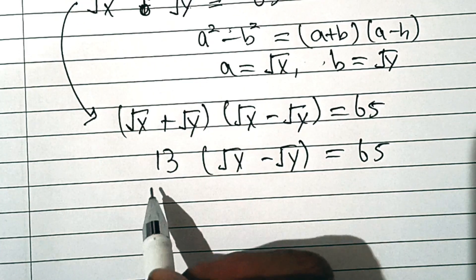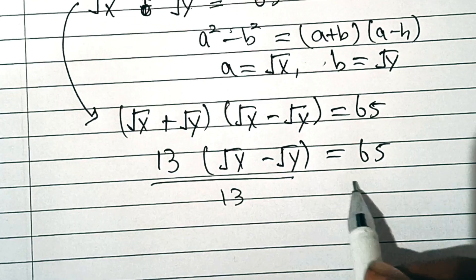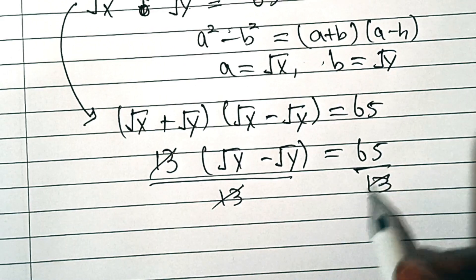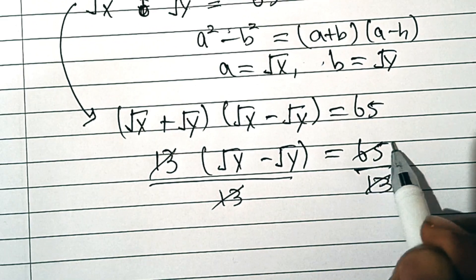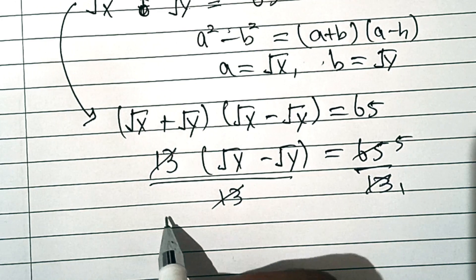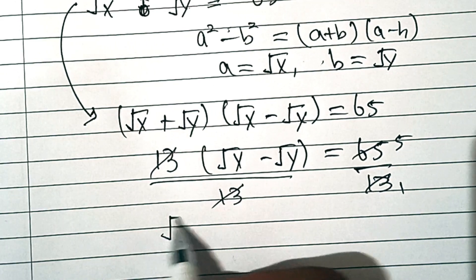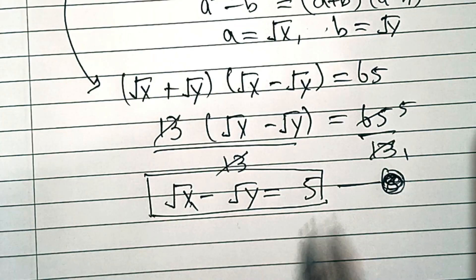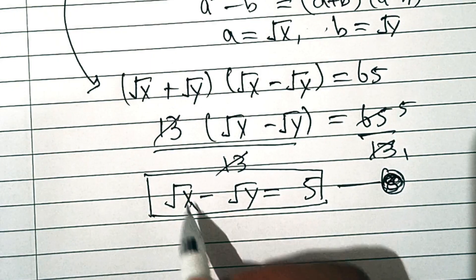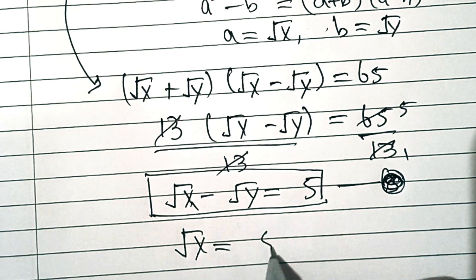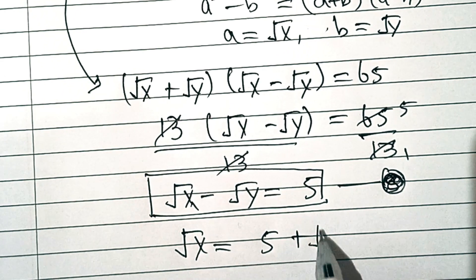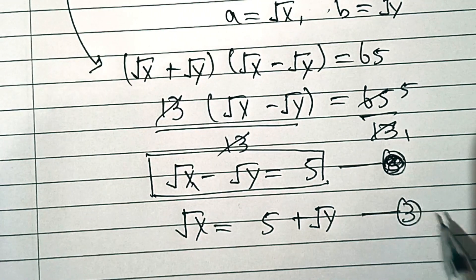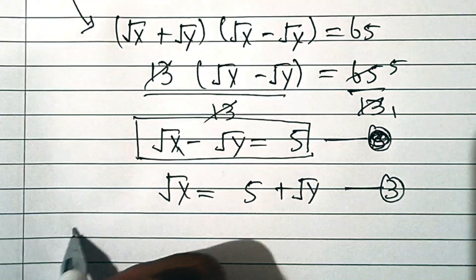In the next step, divide both sides by 13. The 13s cancel out, and 65 ÷ 13 = 5, so we have √x − √y = 5. We can rewrite this as √x = 5 + √y. Let's call this Equation 3.